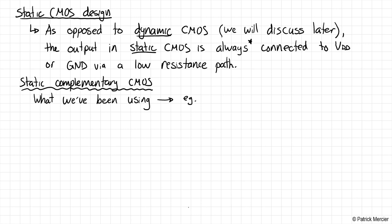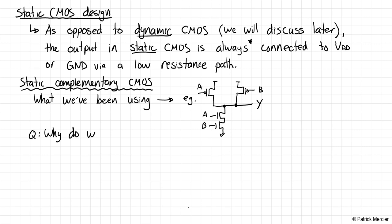For example, if we want to build a NAND gate, we have our pull-up network composed of PMOS devices and our pull-down network composed of NMOS devices, with inputs A and B and output Y. I want to take a deeper dive into why we build our static complementary gates in the way that we've told you to. The first question is: why do we use PMOS for the pull-up network and NMOS for the pull-down network?